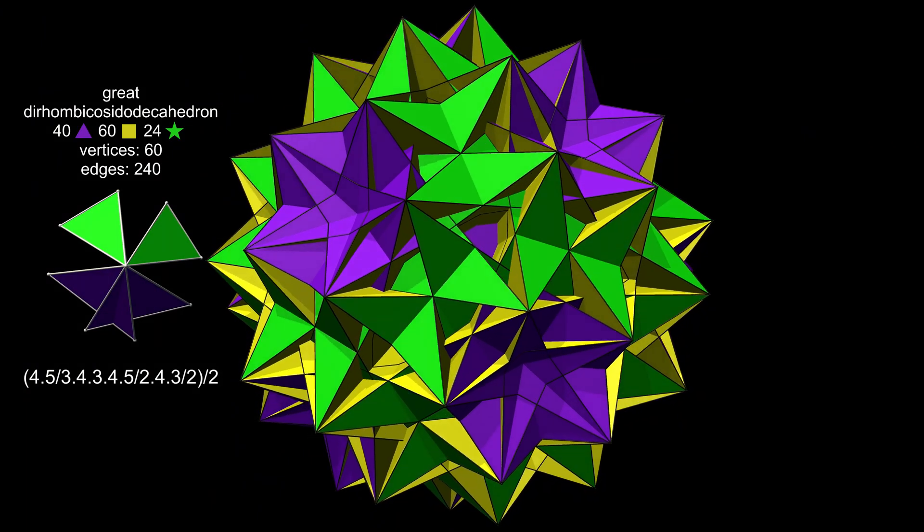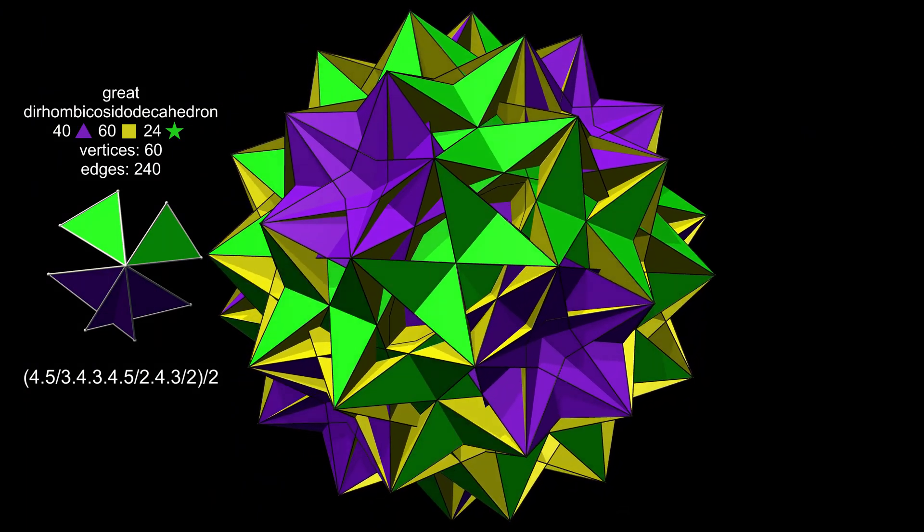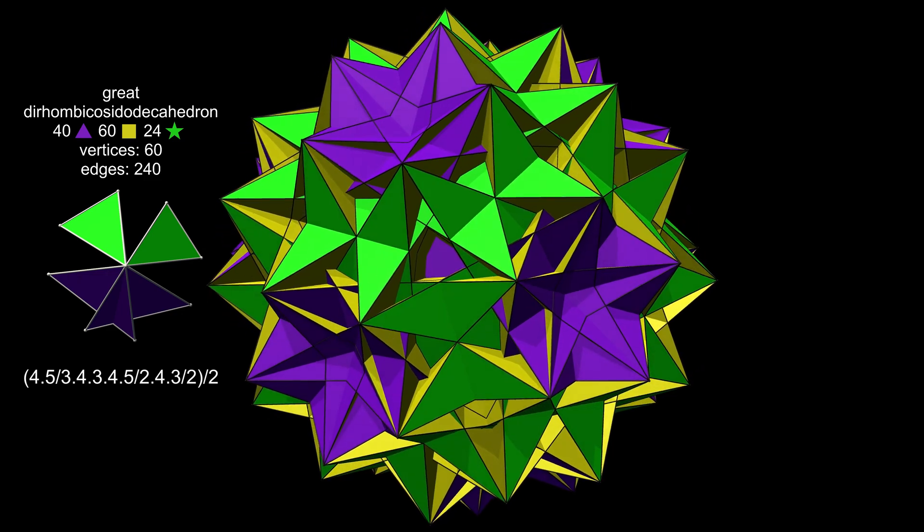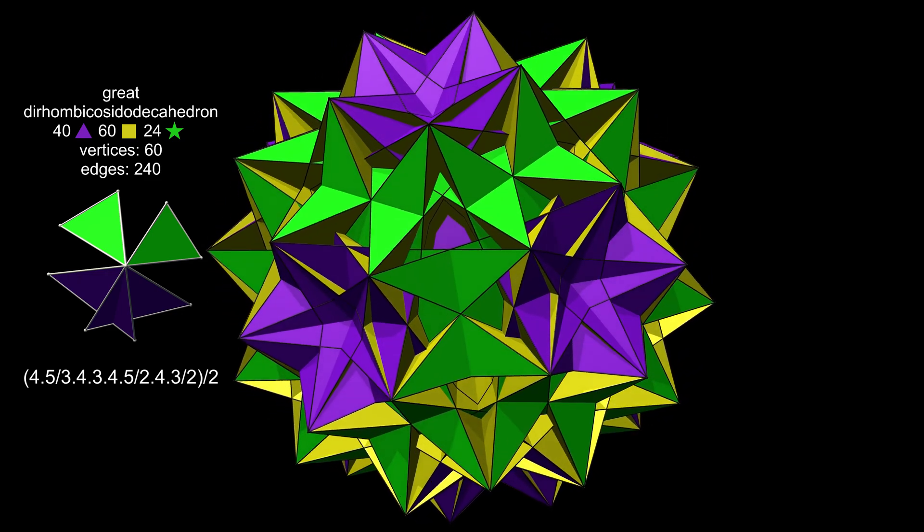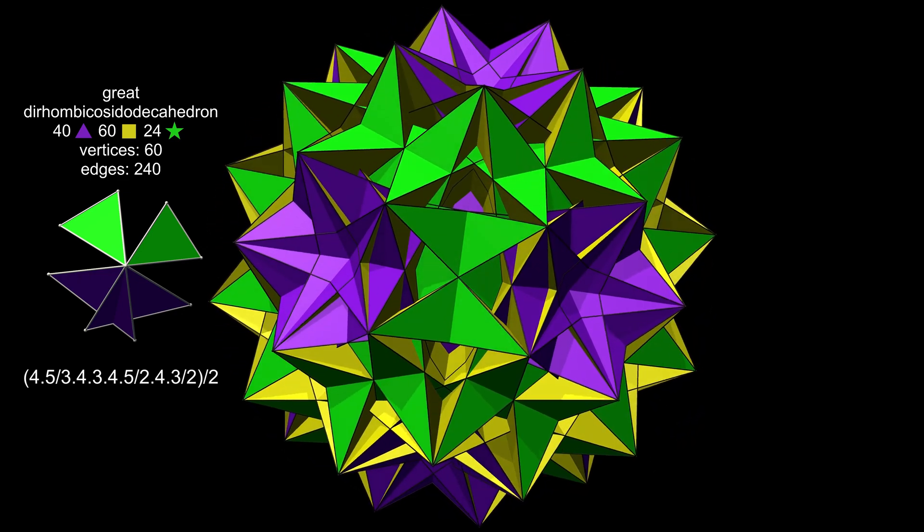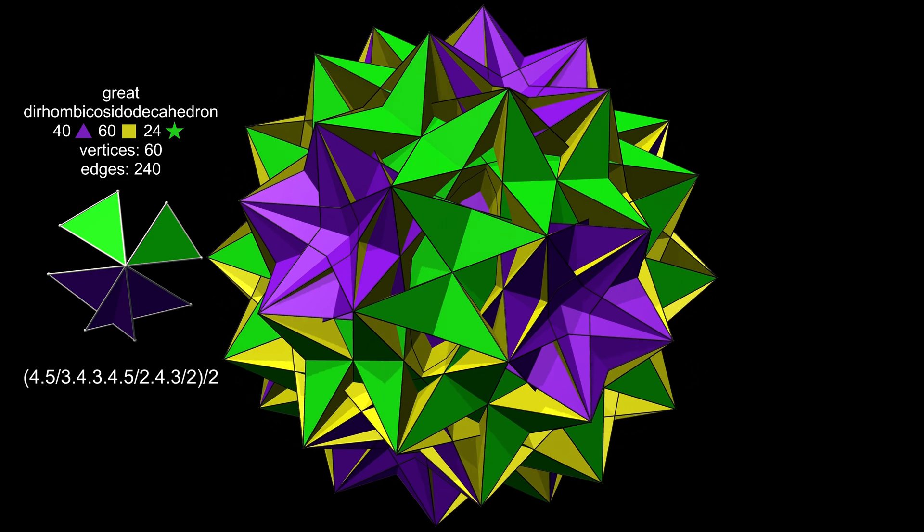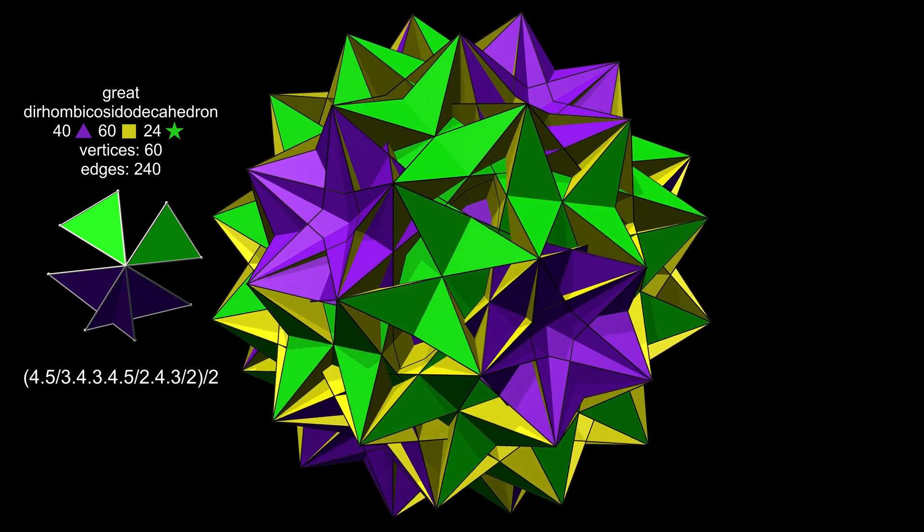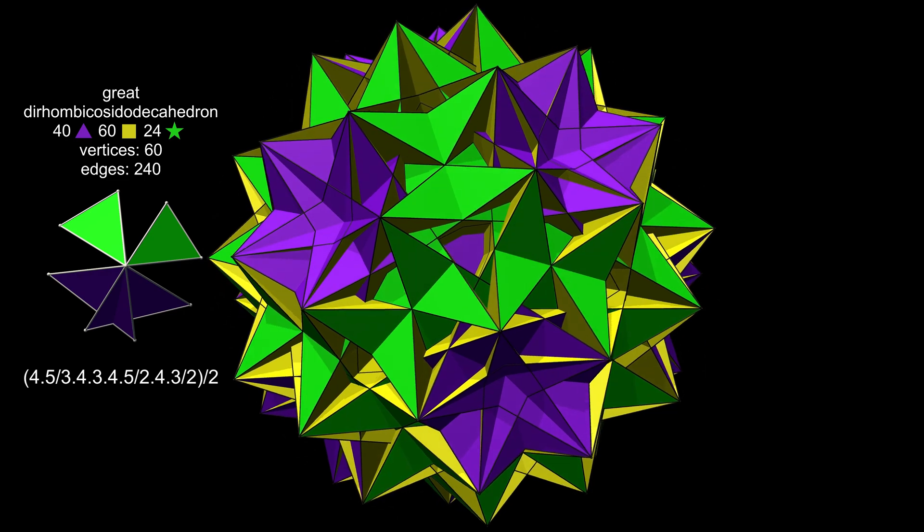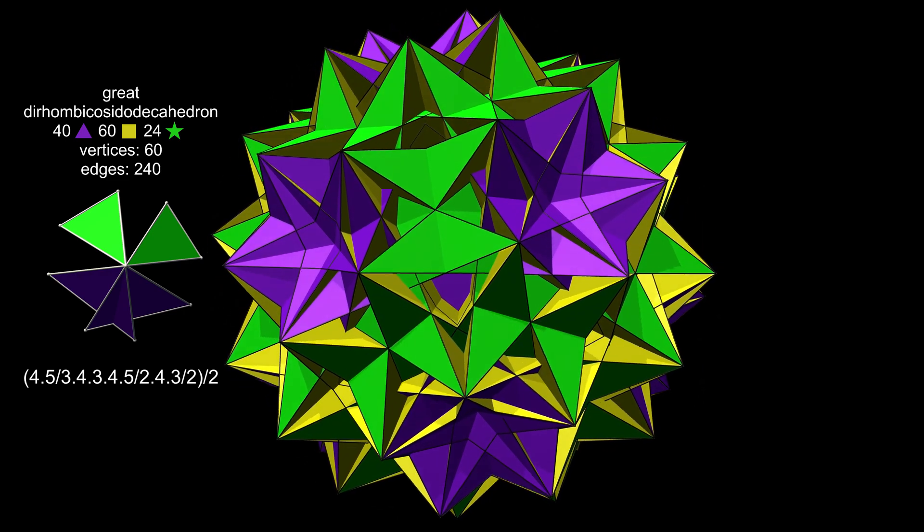And finally, we have Uniform Polyhedron number 75, the great Dirhombicosidodecahedron, also known as Miller's Monster, after JCB Miller, although I don't know if Miller himself discovered it. This figure is the exception to almost every rule. It has eight faces at each vertex. No other uniform polyhedron has more than six.